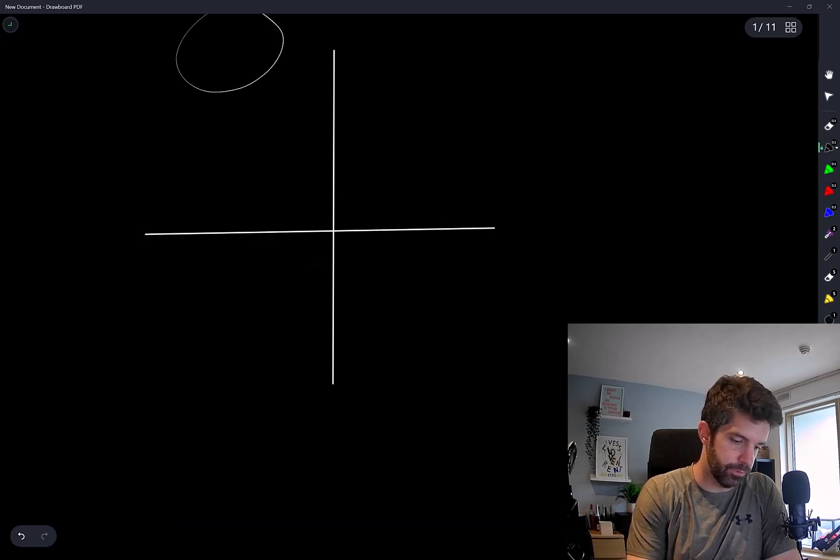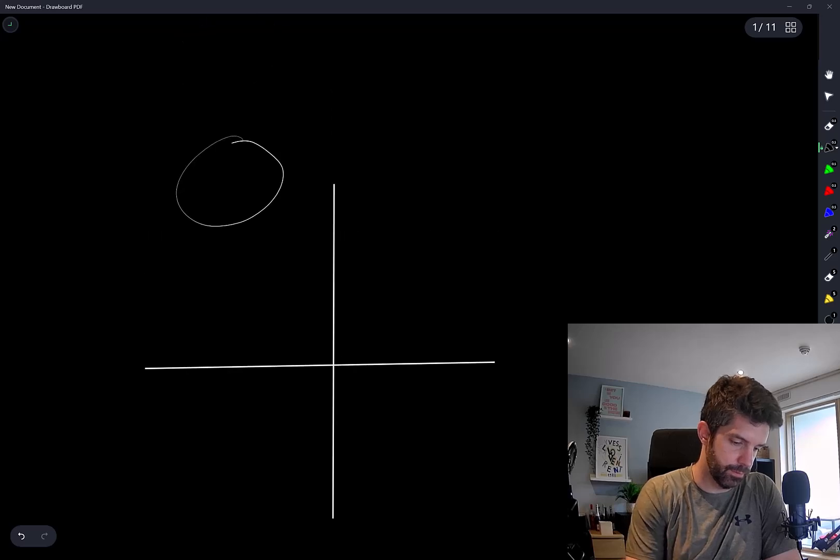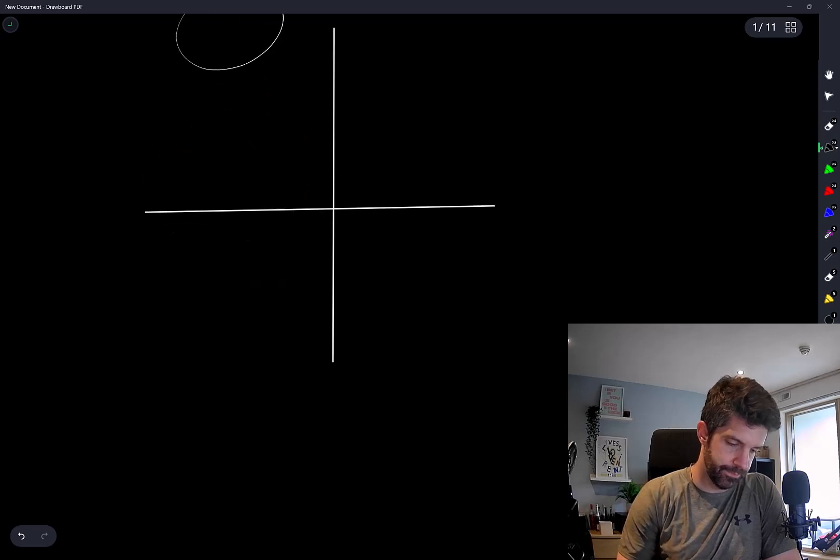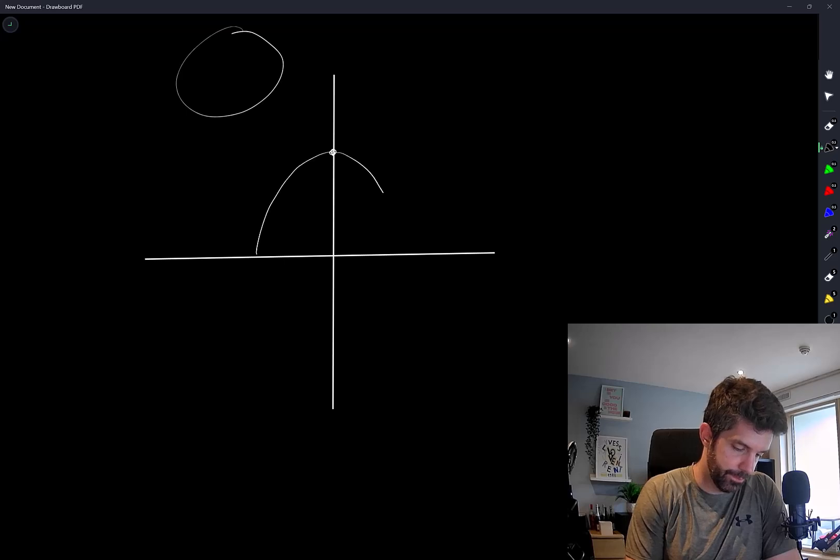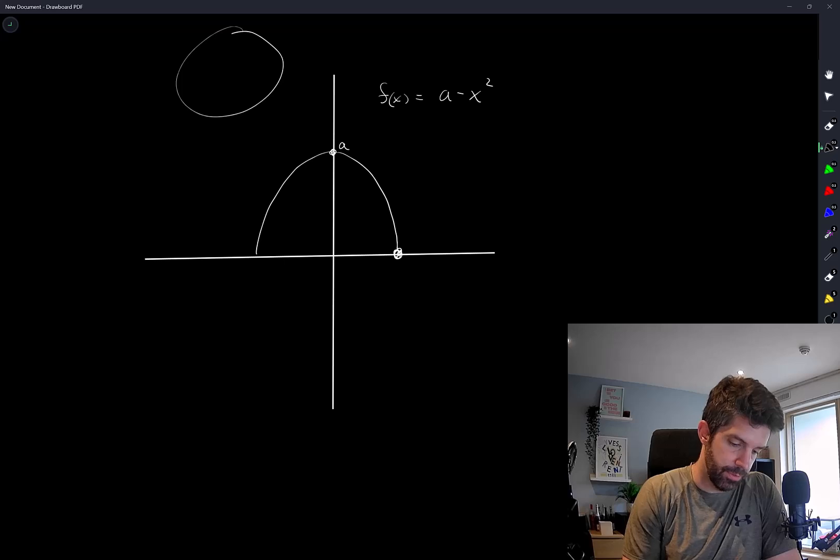f of x looks something like this. A minus x squared, so that's a. And this value here is going to be root a.